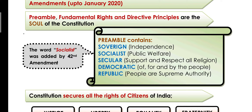The second word is 'socialist,' meaning the country is for the public's welfare — no dictatorship — but it is for the welfare of the people. This word was not originally in the constitution; it was added to the preamble by the 42nd amendment.